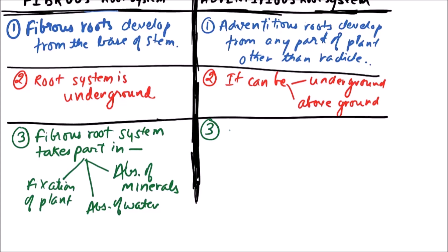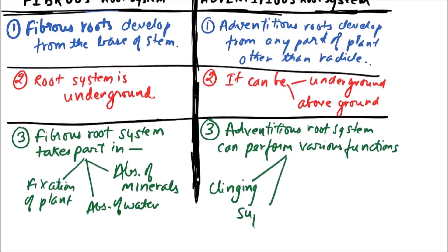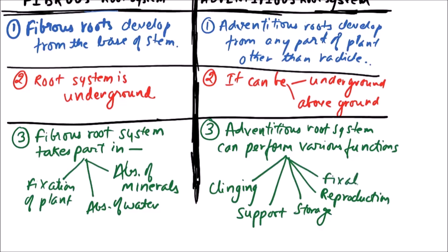But in the case of the adventitious root system, it can perform various functions. For example: clinging, support, storage, reproduction, fixation, and absorption.